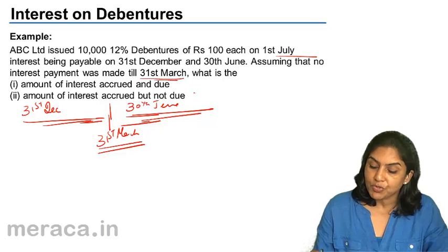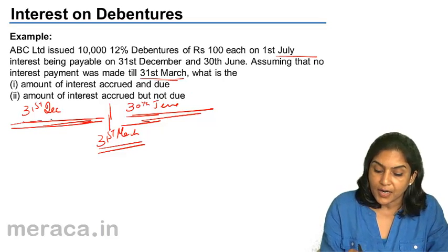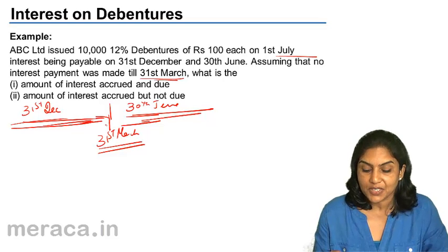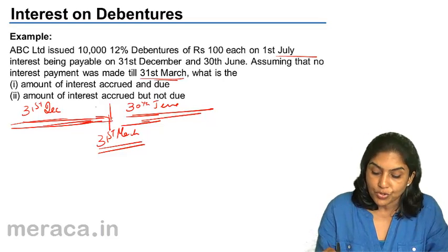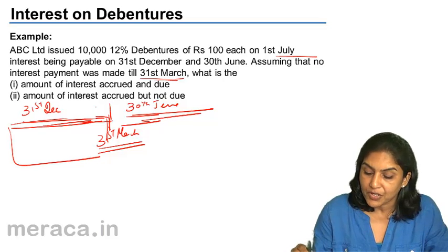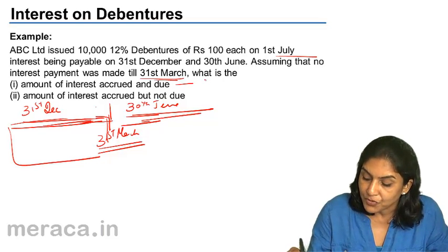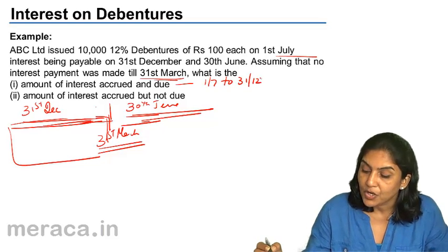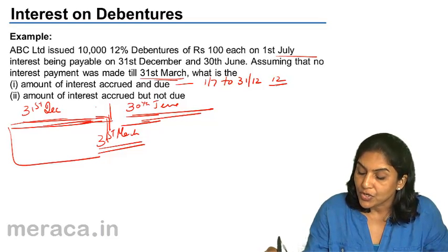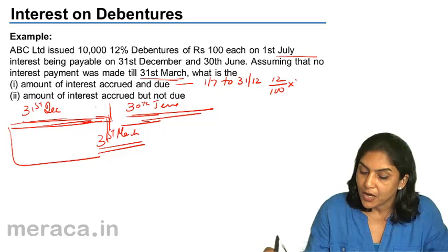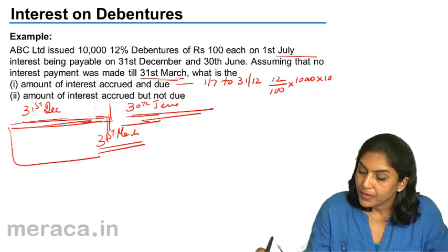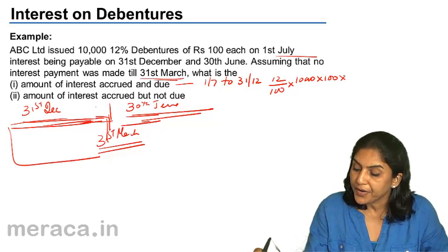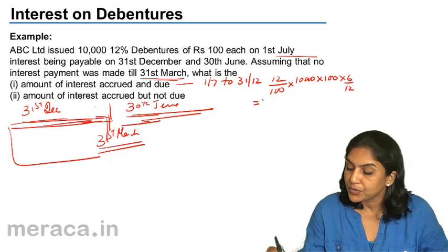The amount of interest which is accrued and due is the interest payable up to 31st December — this was due but not paid. So what is the amount of interest which is accrued and due? It is interest for the period 1st July to 31st December, that is 6 months interest: 12% of 10,000 debentures of ₹100 for 6 months, equal to ₹60,000.